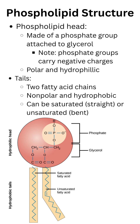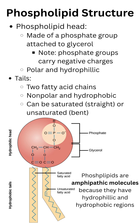It has two fatty acid tails, which unlike our heads, are going to be non-polar and hydrophobic. The tails can be saturated or unsaturated, and the ratio between them is going to impact membrane fluidity. Because they contain both a hydrophobic and hydrophilic region, our phospholipids are amphipathic.